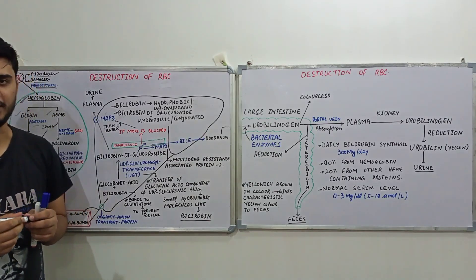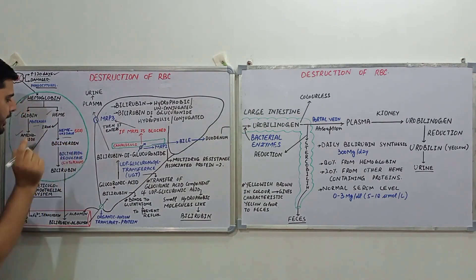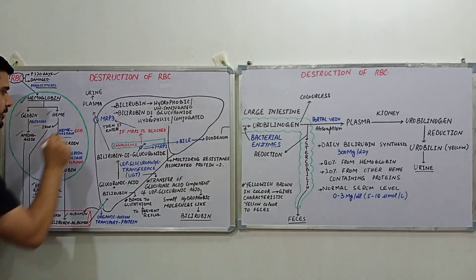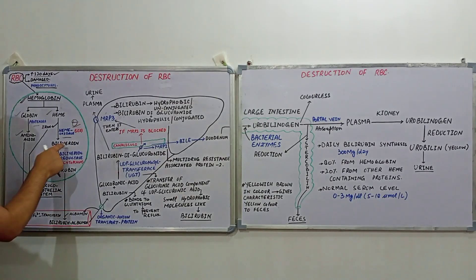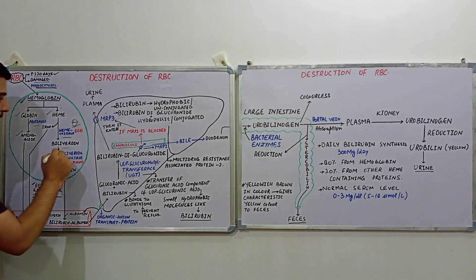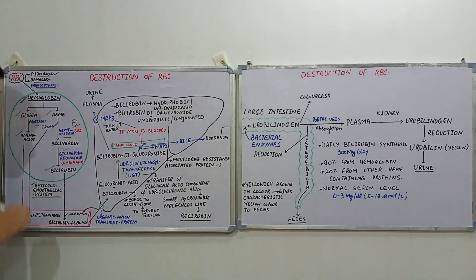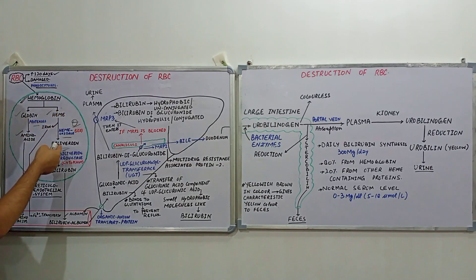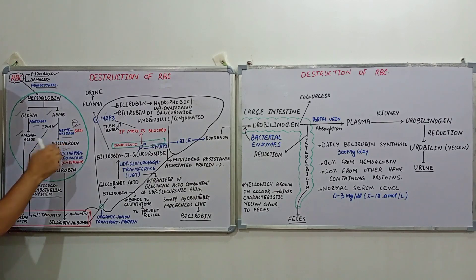The other component of hemoglobin is heme. Heme consists of iron and porphyrin. The iron is released, and the remaining part of the heme is oxidized by heme oxidase into biliverdin. Heme oxidase is present within the smooth endoplasmic reticulum — that's an important point. This biliverdin is then reduced by biliverdin reductase, a cytoplasmic enzyme, into bilirubin.